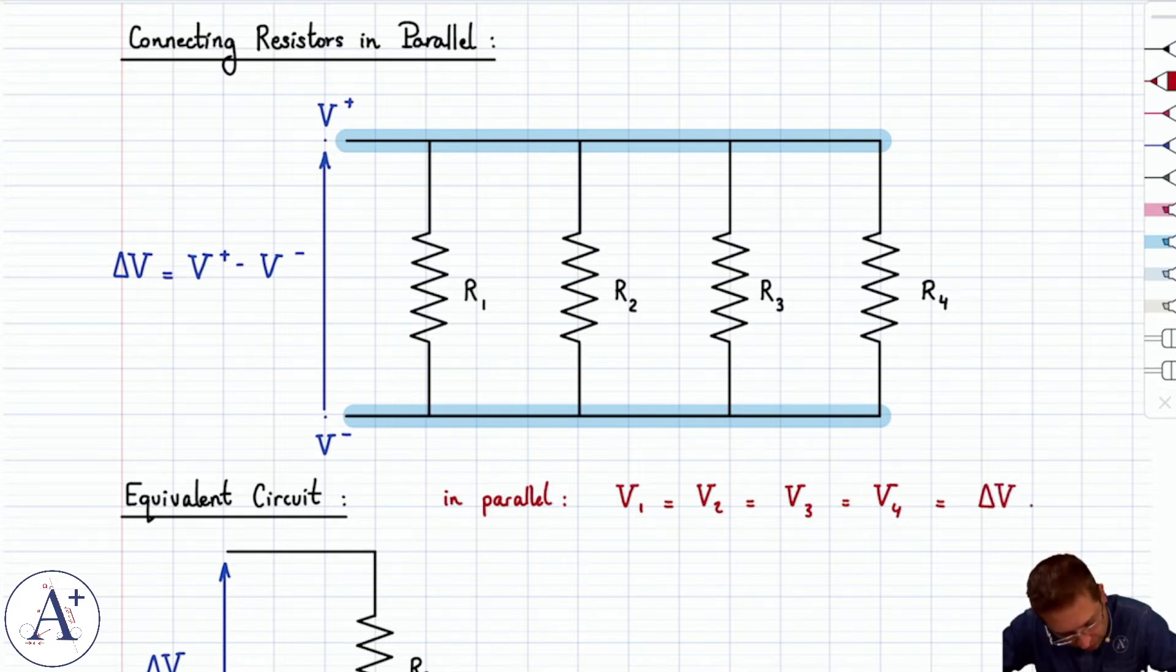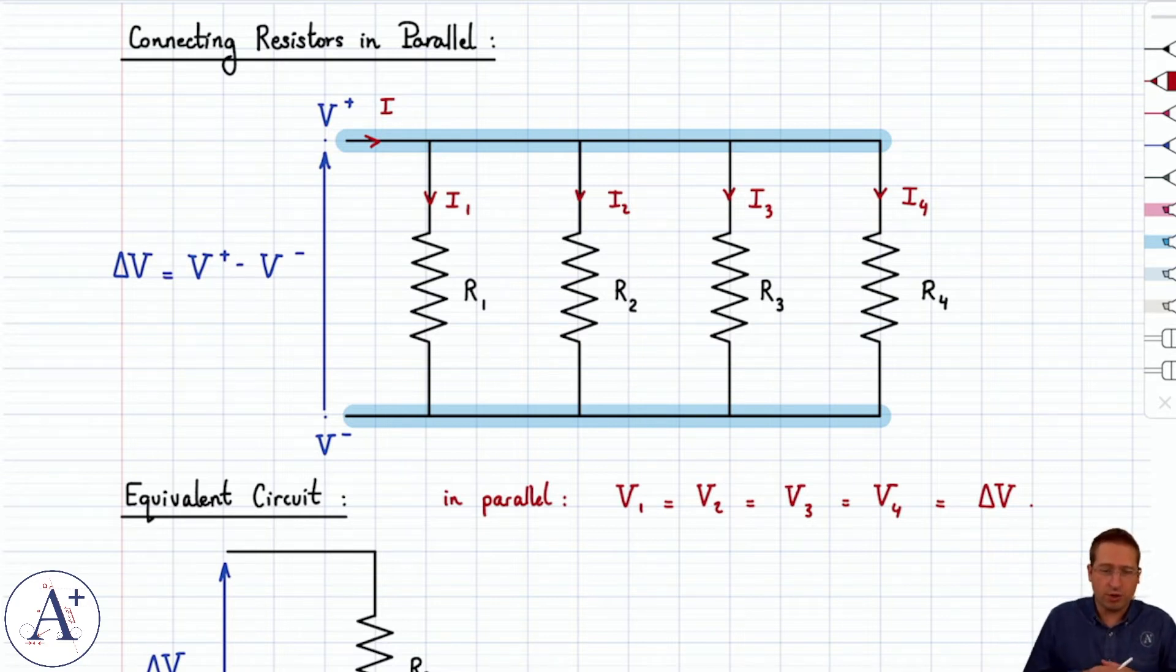And what the current is going to do here is split into I1, I2, I3, and I4 in such a way that R1 times I1 is equal to delta V, R2 times I2 is equal to delta V, and so on and so forth for R3 and R4.